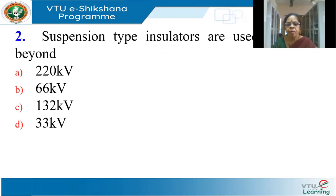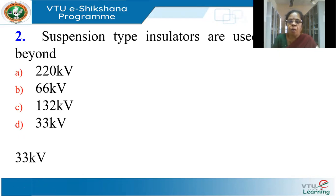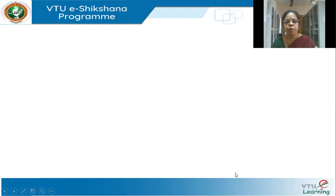Suspension type insulators are used for voltages beyond how much? They are used for voltages higher than 33 KV. Below that you can use pin insulators. Pin insulators become uneconomical for voltages above 33 KV, so we go for suspension type insulators. The correct answer is 33 KV — beyond 33 KV we use suspension type insulators.